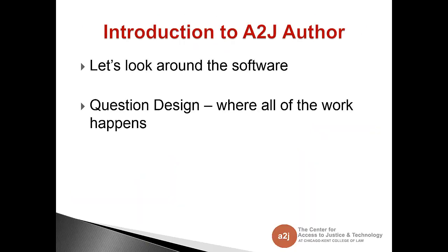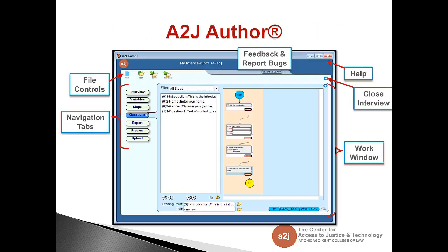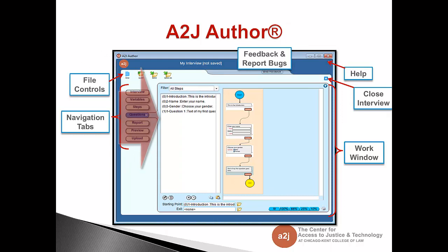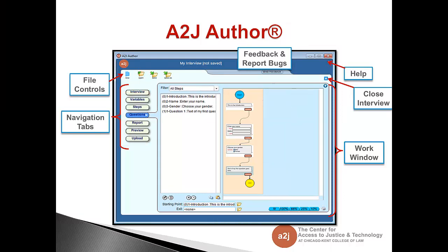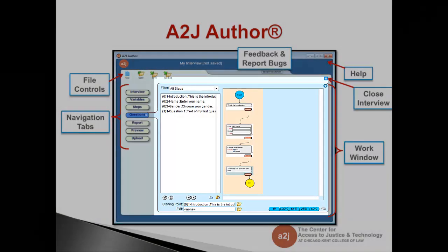So, let's dive into A2J Author a little bit. First, we'll take a look at the software and its different components and then we'll talk about question design where all the work actually happens. This is the first screen you'll see when you open a new A2J Guided Interview. We have file controls, navigation tabs, feedback and report bug option. There's help which will take you out to an A2J Guided Interview authoring guide. You can close the interview and then as you'll see in the middle is the main work window.